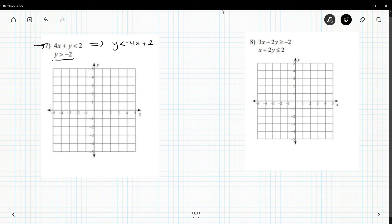And I'm going to graph that one first. So y is less than negative four x plus two, so plus two. And negative four means down four to the right one. And we have our line, it is going to be a dashed line.